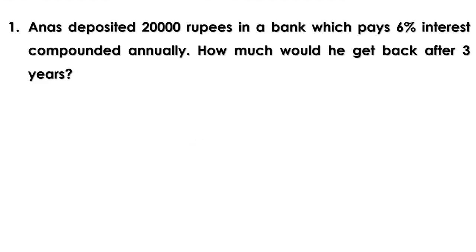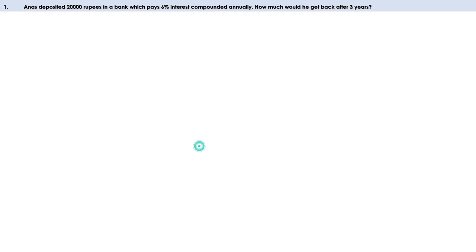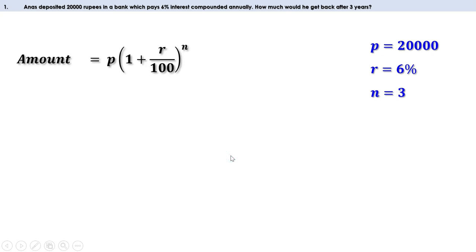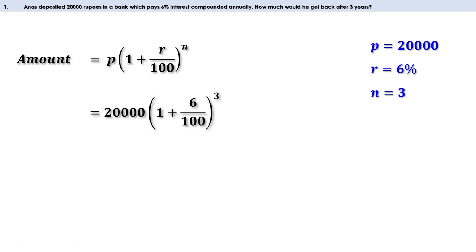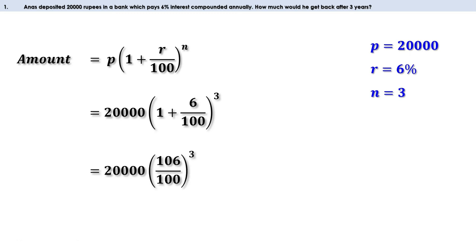First problem on page 92: Anas deposited 20,000 rupees in a bank which pays 6% interest compounded annually. How much would he get back after 3 years? P is 20,000, R is 6%, and N is 3. Amount is P × (1 + R/100)^N = 20,000 × (1 + 6/100)³. Since 1 + 6/100 = 106/100, this becomes 20,000 × (106/100)³.